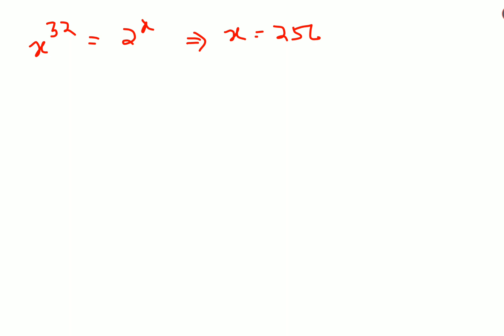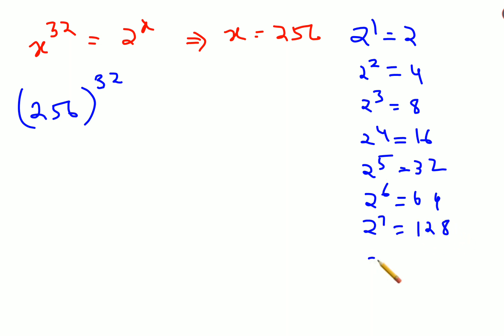Let's put it in the LHS, so we have 256 raised to 32. Now 2 raised to 1 is 2, 2 raised to 2 is 4, 2 raised to 3 is 8, 2 raised to 4 is 16, 2 raised to 5 is 32, 2 raised to 6 is 64, 2 raised to 7 is 128, and 2 raised to 8 is 256. So we will write this as 2 raised to 8, the whole raised to 32.